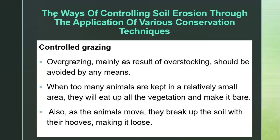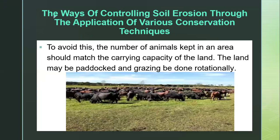The other method is controlled grazing. Overgrazing, mainly as a result of overstocking, should be avoided — when too many animals are kept in a relatively small area they eat up all the vegetation and make the soil bare. As animals move, they also break up the soil with their hooves, making it loose. The number of animals kept in an area should match the carrying capacity of the land. Land may be paddocked or grazing done rotationally to avoid soil remaining bare.